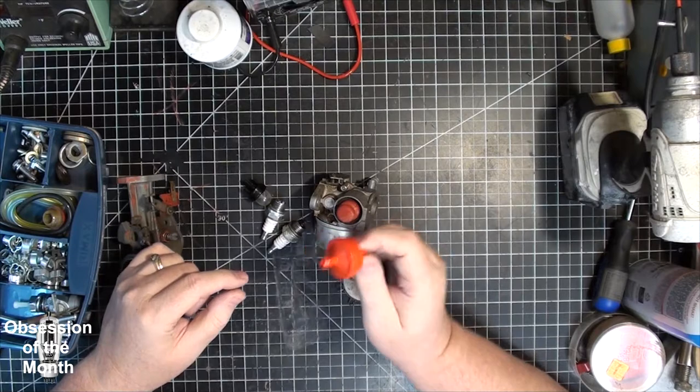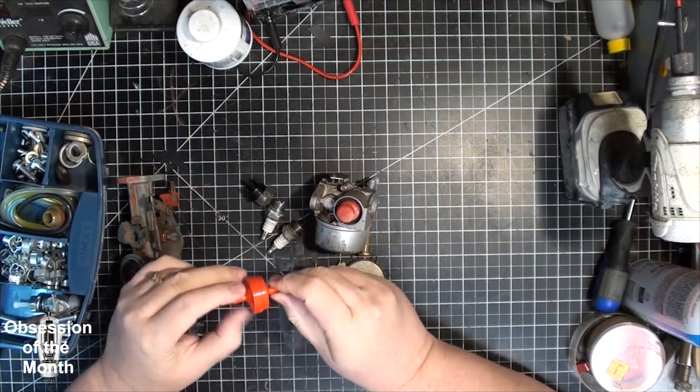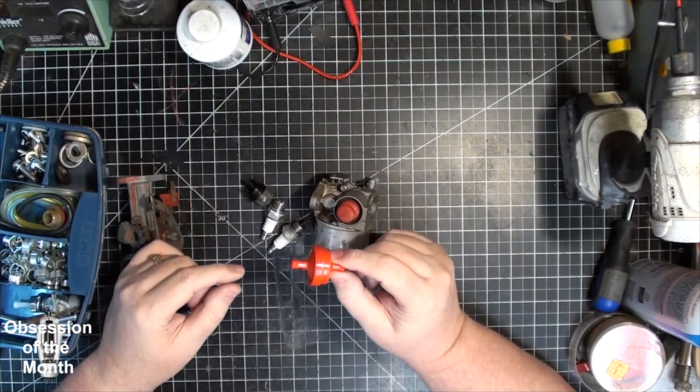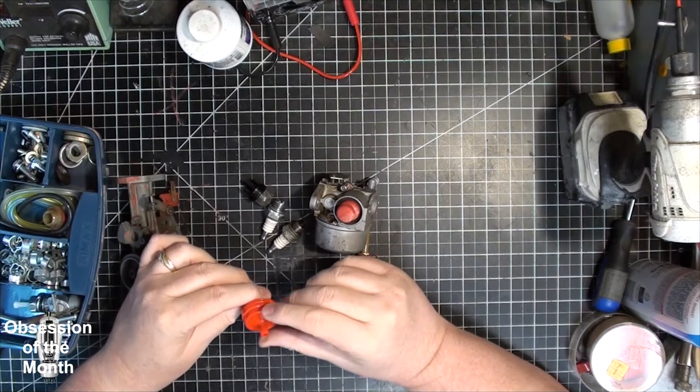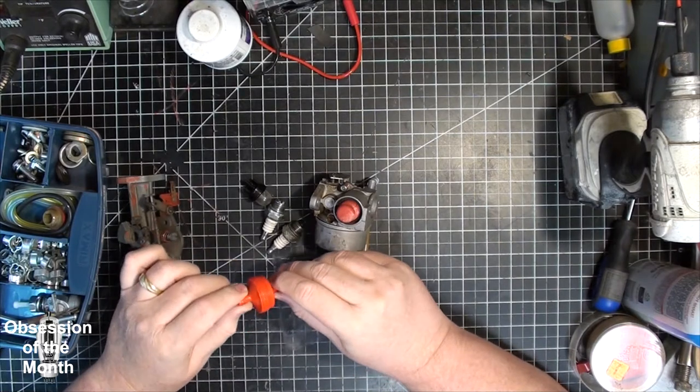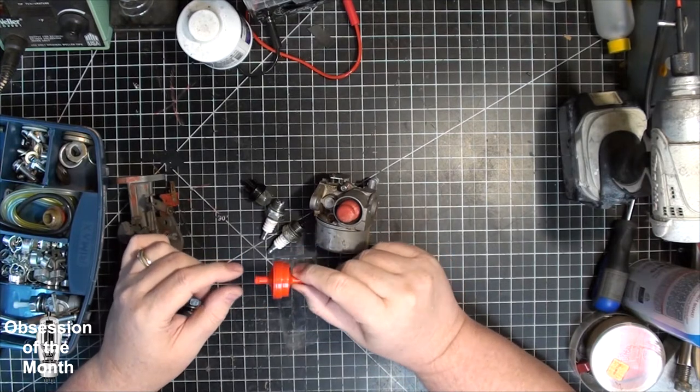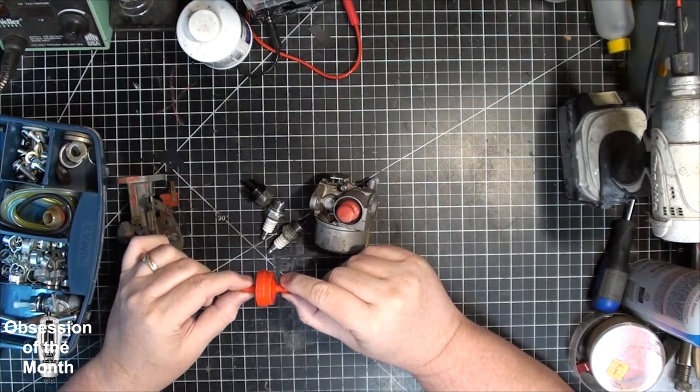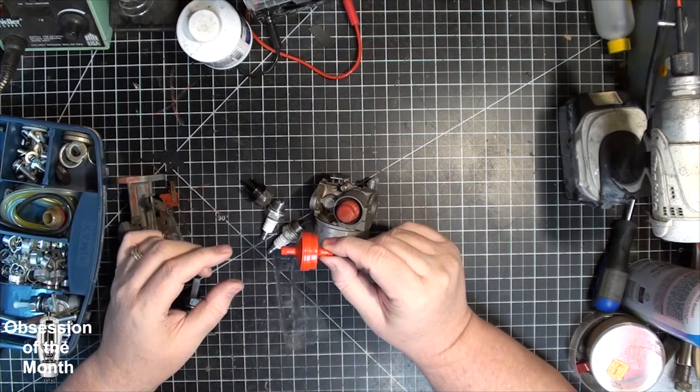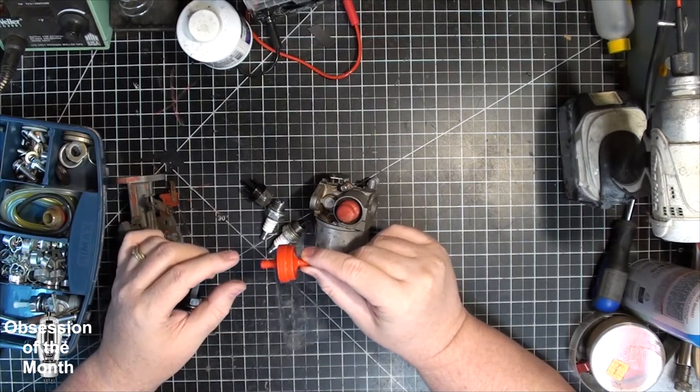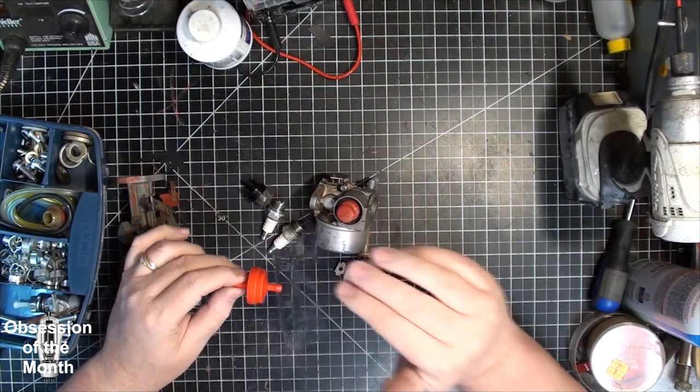Then you take some non-detergent 30-weight motor oil and give it a good soaking, then squeeze out all the excess oil the same way. You don't need this thing dripping—it just needs to be dampened with oil. These are cheap screen filters that you'll see on some equipment, and they can oftentimes cause more trouble than they're worth, mostly because people put them on equipment they're not designed to go on.